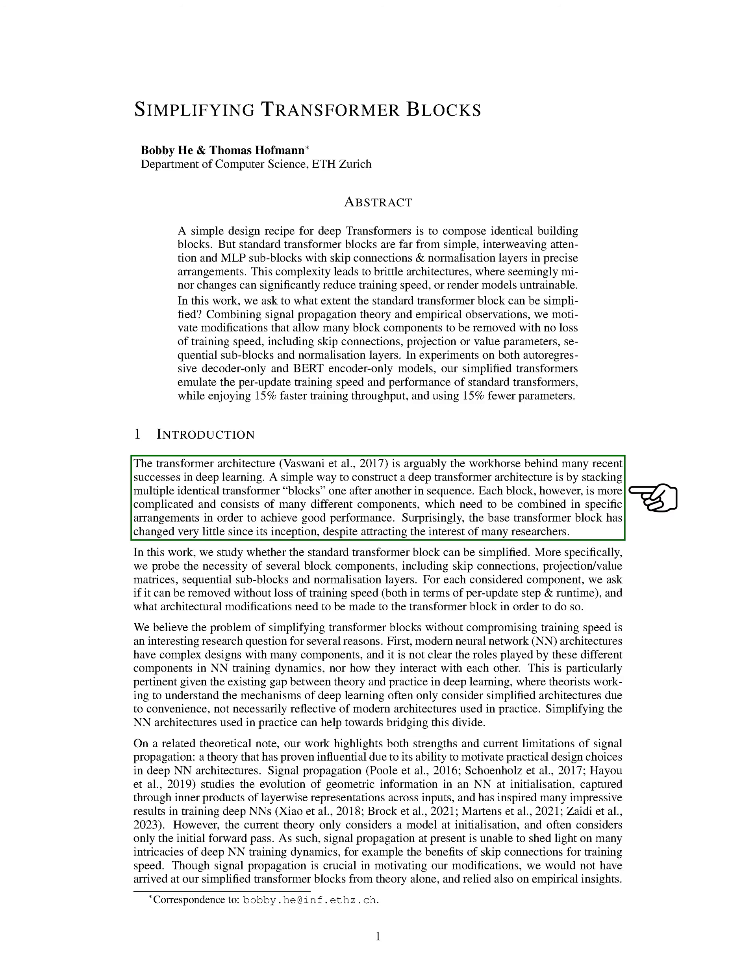We're going to delve into the world of transformer architecture, a key player in the recent advancements in deep learning. The typical way to build a deep transformer architecture is by stacking identical transformer blocks one after the other. However, each block is a complex entity, made up of various components that need to be arranged in a specific way to achieve optimal performance. Interestingly, the basic transformer block hasn't changed much since its creation, despite the attention it has garnered from researchers.